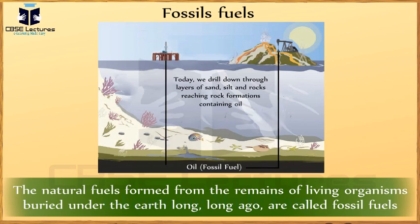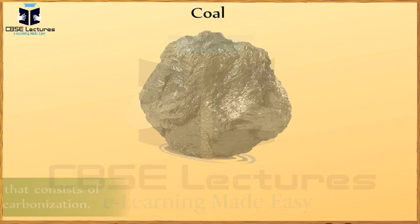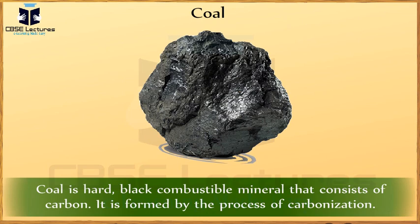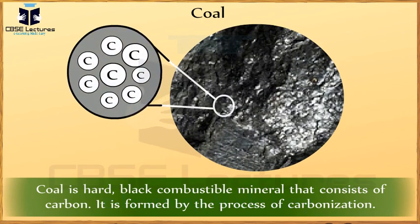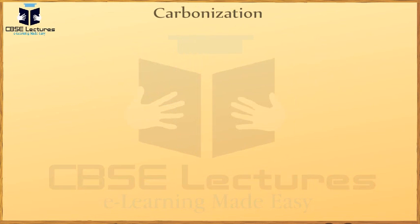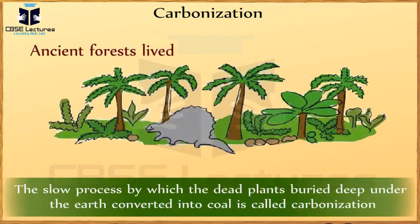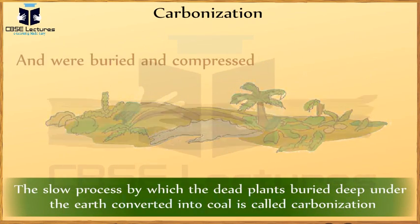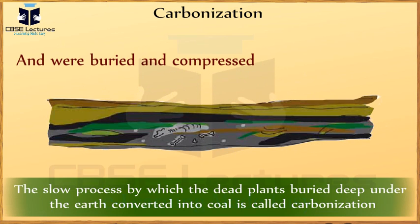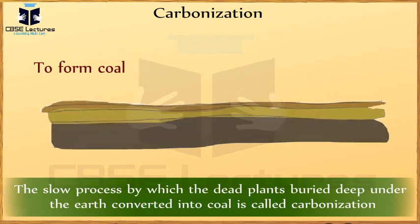Buried remains of large land plants and animals were converted into coal, whereas those of tiny marine plants and animals were converted into petroleum and natural gases. Coal is a hard black combustible mineral that consists of carbon. It is formed by the process of carbonization. Carbonization is the slow process by which dead plants buried deep under the earth are converted into coal.